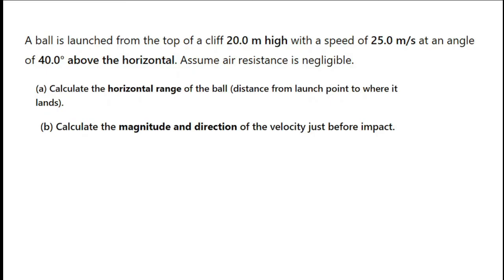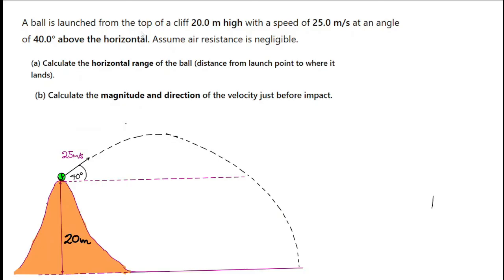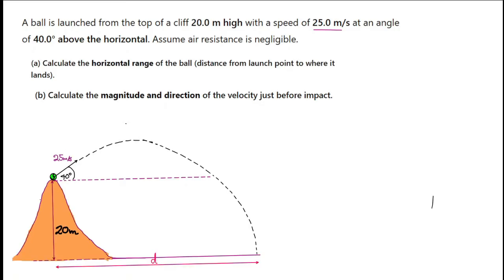Pause the video and give it a try. When you are sure you've done what you could with the question and you've got your answer, play the video and compare your answer with mine. A ball is launched from the top of a cliff 20 meters high with a speed of 25 meters per second at an angle of 40 degrees to the horizontal. Assume no air resistance. Calculate the horizontal range of the ball — that is, the distance d from the launch point to where it lands.